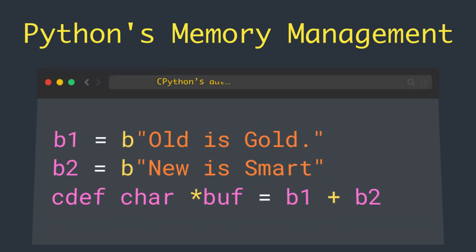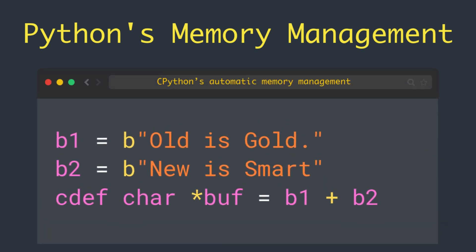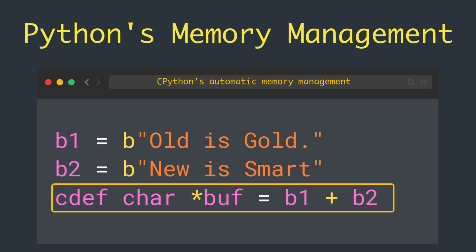Say for instance we have two Python bytes objects b1 and b2, and we want to extract the underlying character pointer after adding them together, as you can see on the screen. The b1 plus b2 expression is a temporary Python bytes object, and the assignment attempts to extract that temporary object's character pointer using Cython's automatic conversion rules.